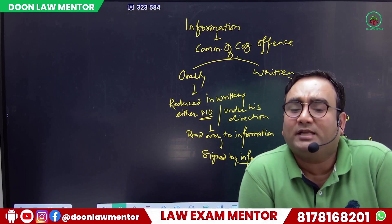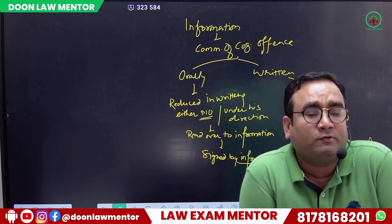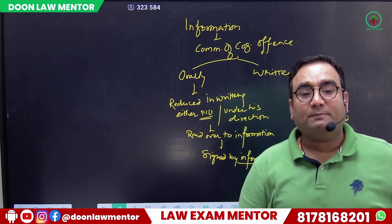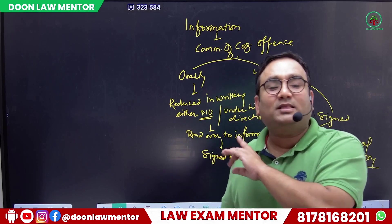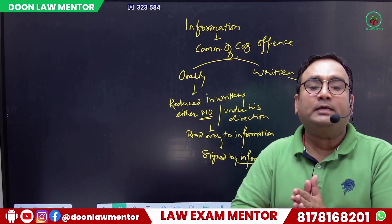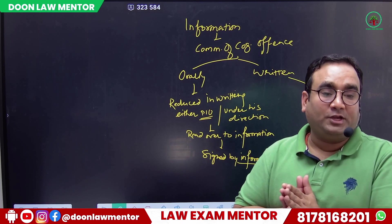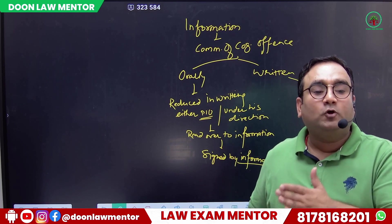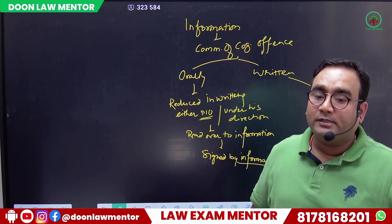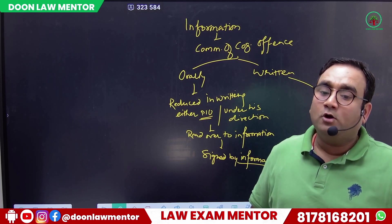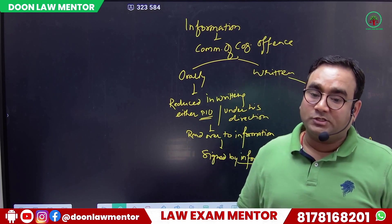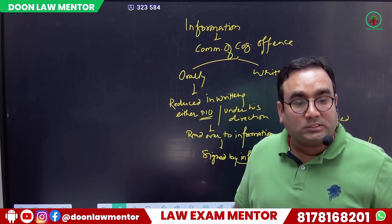This is called the occurrence report under Sections 157 and 158. The purpose of the occurrence report is only to apprise the nearest judicial magistrate having jurisdiction in the matter that a crime has occurred and we have started the investigation. After 24 hours we will bring our report on what investigation has been done.